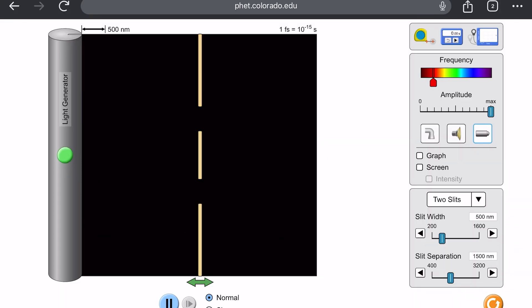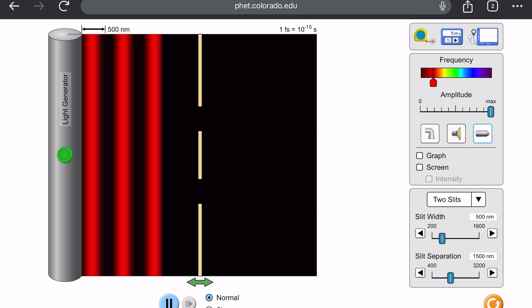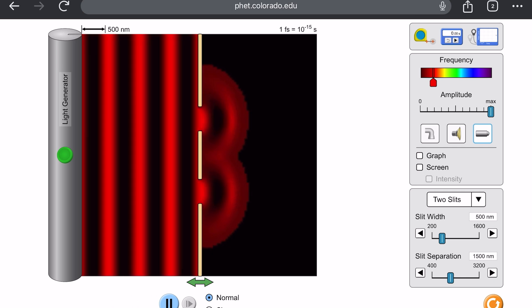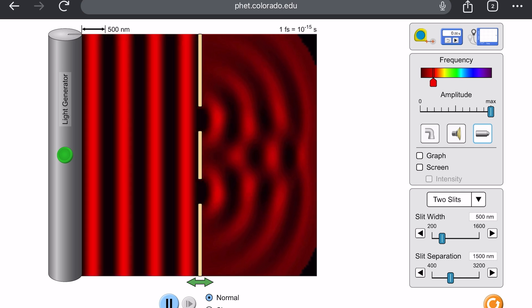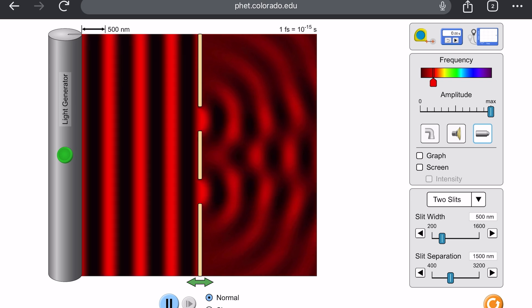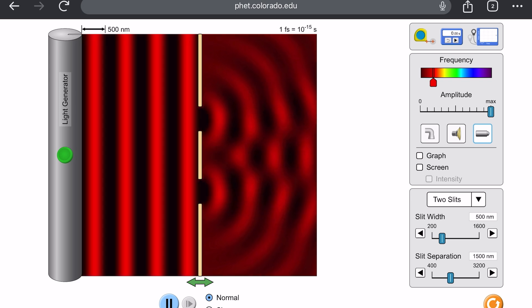Whereas when light is shot through two slits, the light diffracts through the slits, and then the interference of the two diffracted waves on the other side causes a double slit diffraction pattern on the screen beyond the slits.